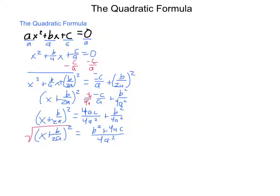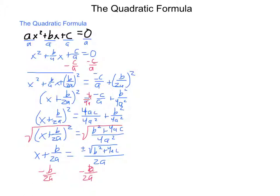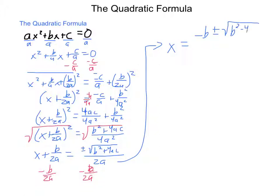Now I'm going to take the square root of each side, leaving me with x plus b over 2a equaling plus or minus the square root of b squared plus 4ac over the square root of 4a squared, which is just 2a. To get x by itself, I subtract b over 2a, and that leaves us with x equals negative b plus or minus the square root of b squared minus 4ac, all divided by 2a. If a were ever 0, we would not be working with a quadratic, so this is the quadratic formula.